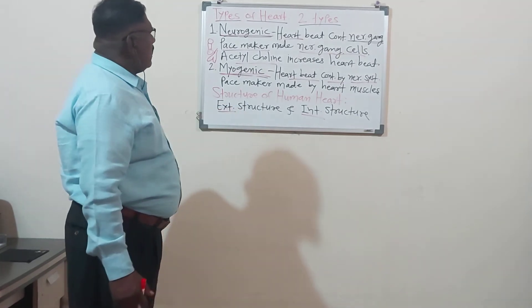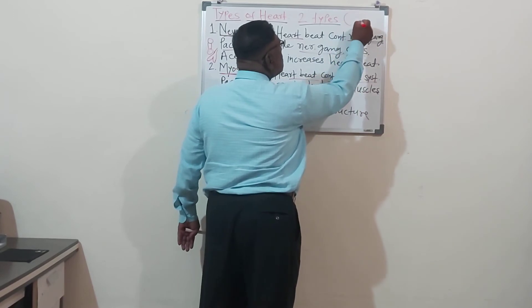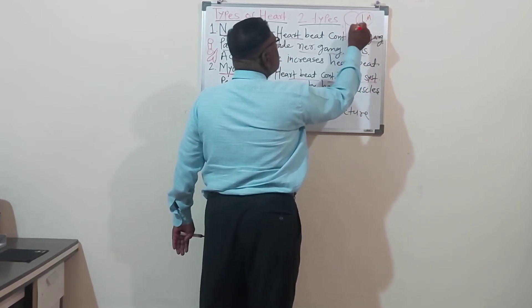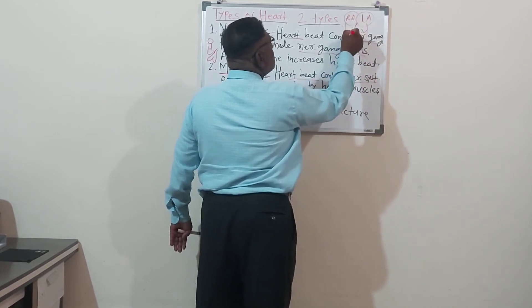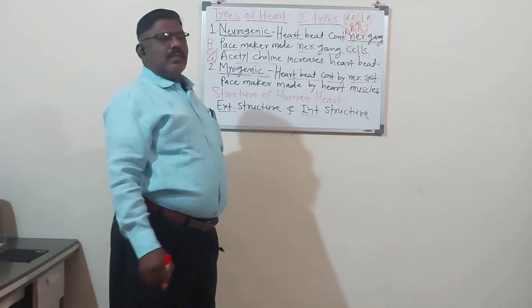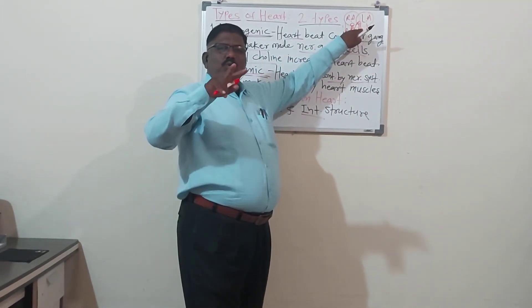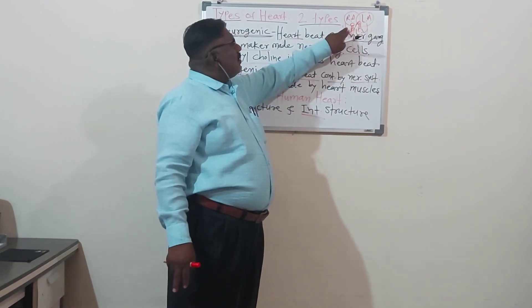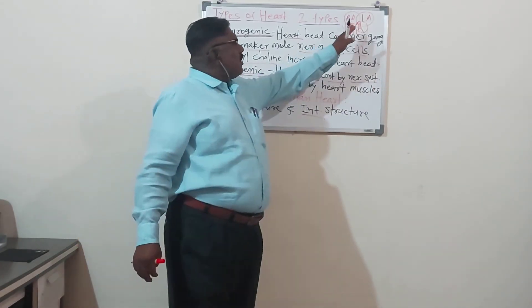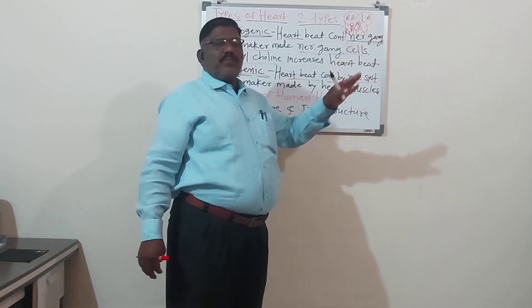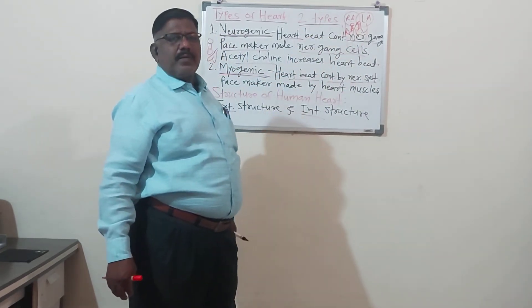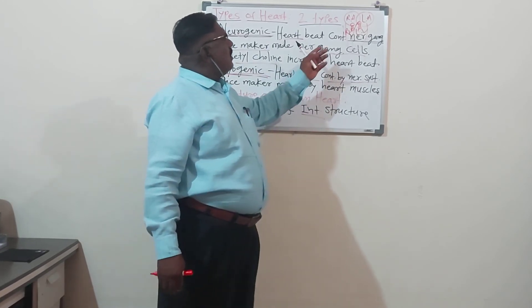Internally the heart has four chambers. This is the left auricle, left ventricle, right auricle, and right ventricle. The opening between auricle and ventricle is called the auriculo-ventricular aperture. On the left side, the wall has two flaps — called the bicuspid valve. On the right auriculo-ventricular aperture, the wall has three flaps — called the tricuspid valve. These walls prevent the backflow of blood.